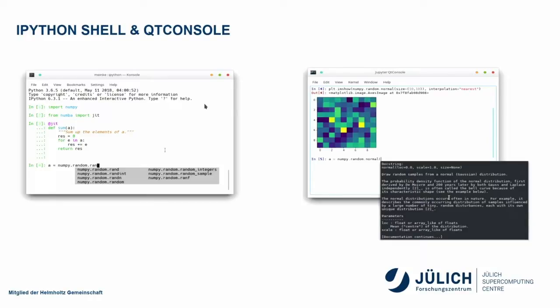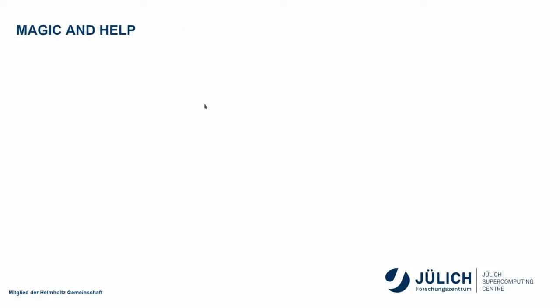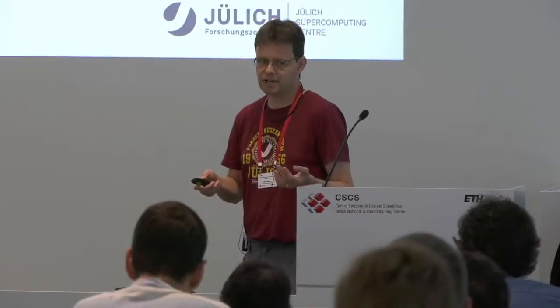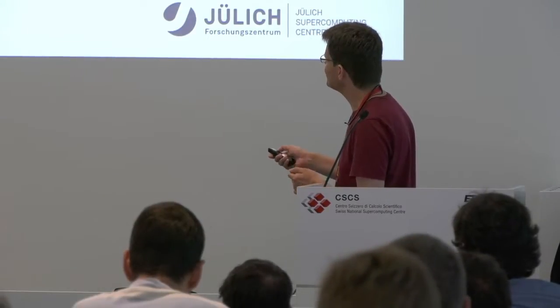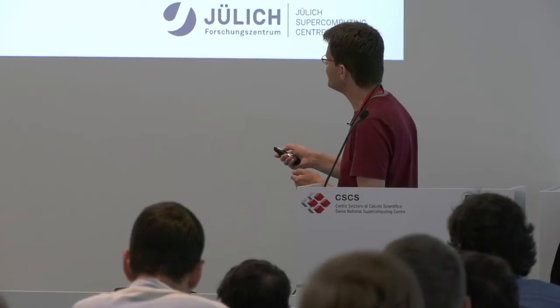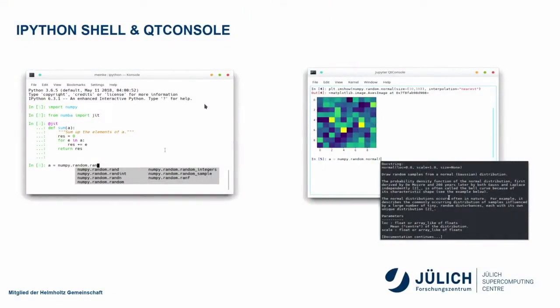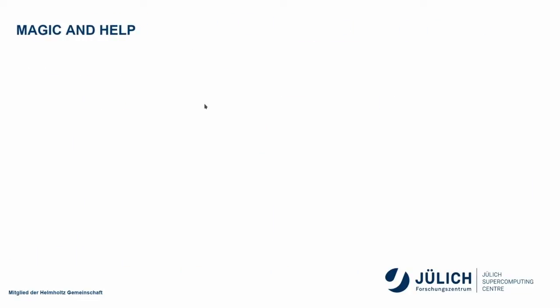Aside from auto-completion, you also get a way to access the documentation — for example, as a tooltip. IPython goes beyond what Python offers. In every IPython shell, you can execute Python commands, and one of the typical features is that it numbers the input and output of each cell, and you can access it later again. Aside from that, there's magic and additional help.